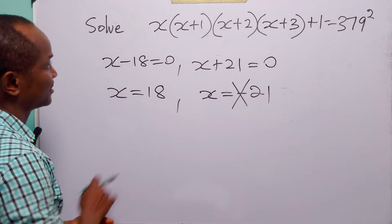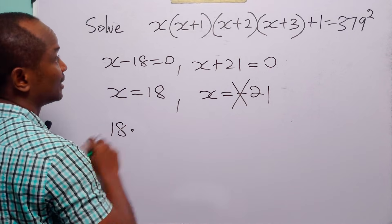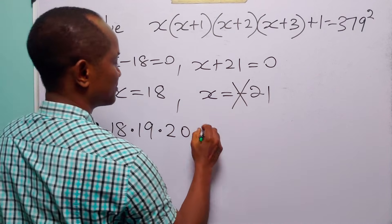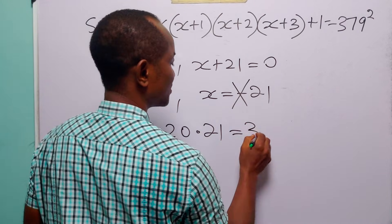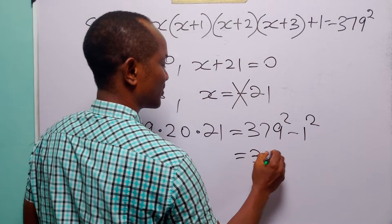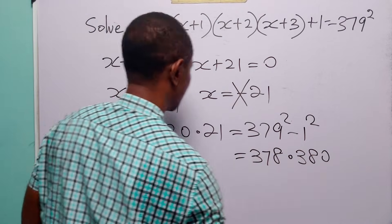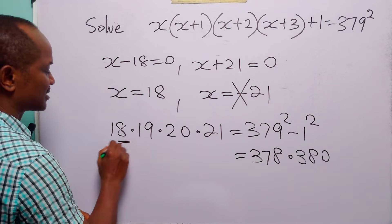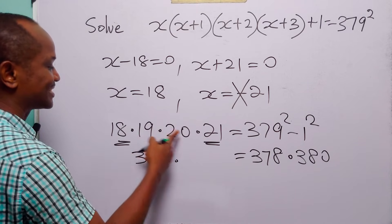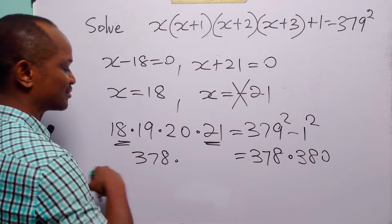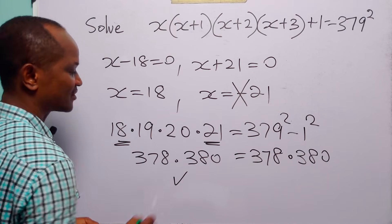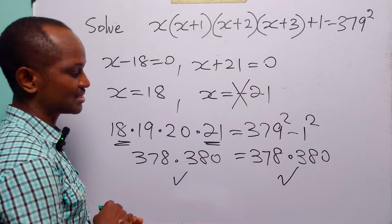Now let us check our results. We have 18 times 19 times 20 times 21 equals 379 squared minus 1 squared, which is 378 multiplied by 380. We already know that 18 times 21 is 378, and 19 times 20 is the same as 190 times 2, which is equal to 380. So you can see that when x equals 18, the left hand side of this equation equals the right hand side.